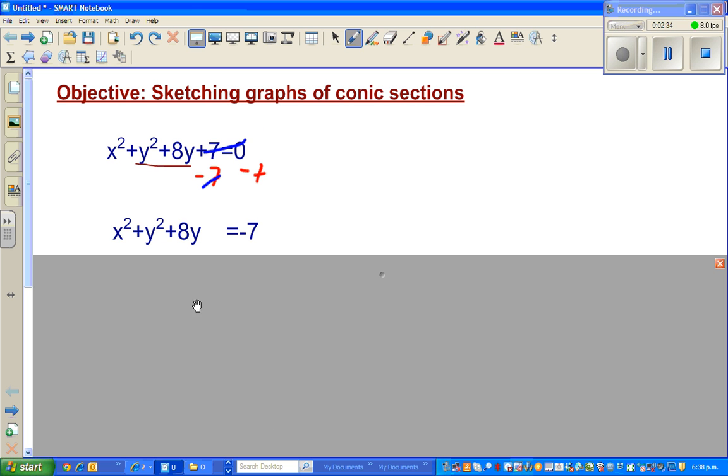So plus 7 and minus 7 gets canceled. That's why the next step looks like this, that is x squared plus y squared plus 8y is equal to negative 7.